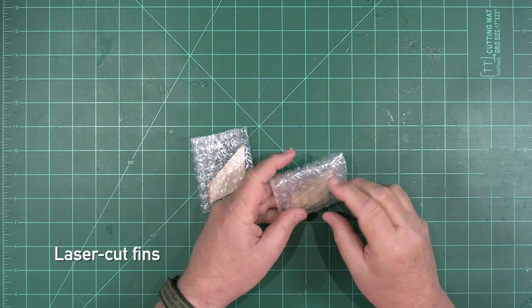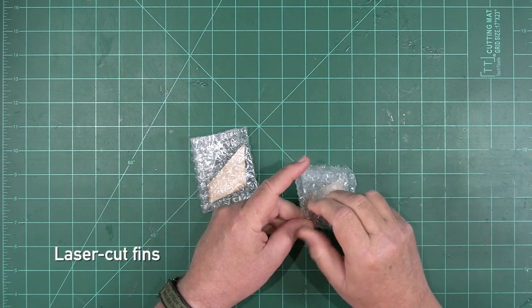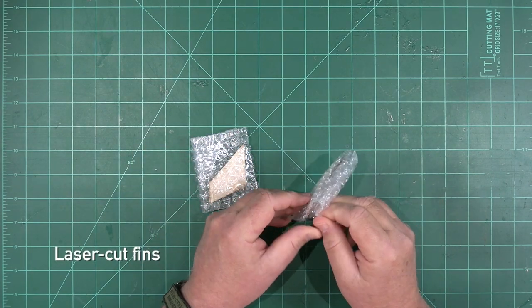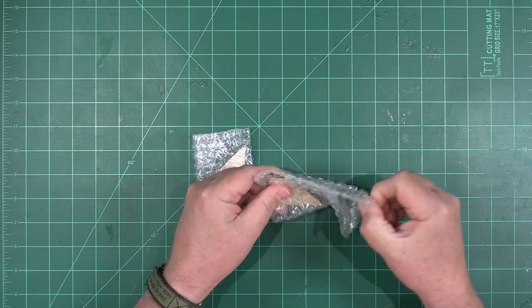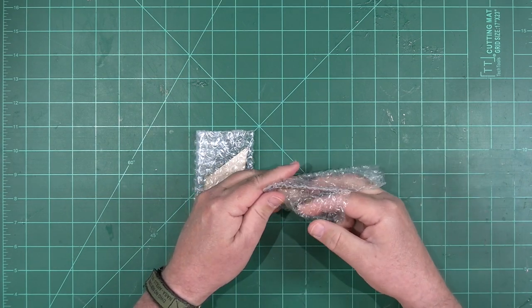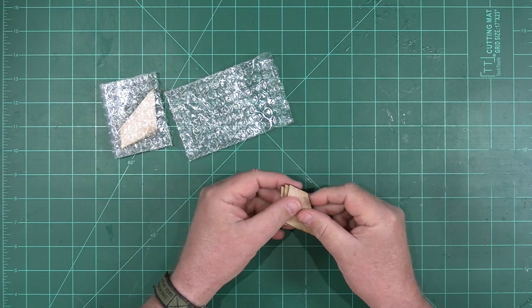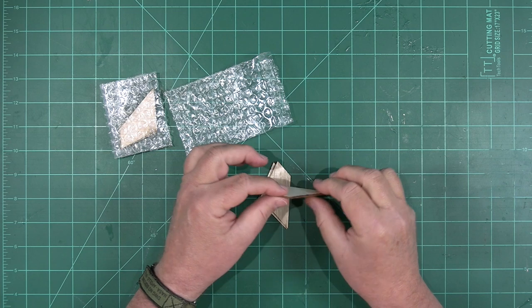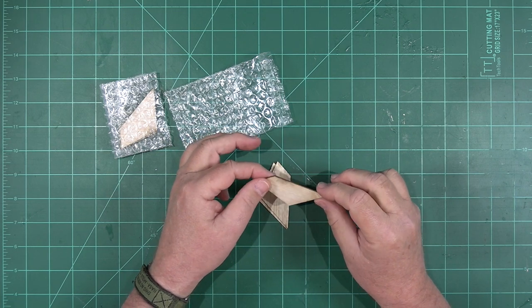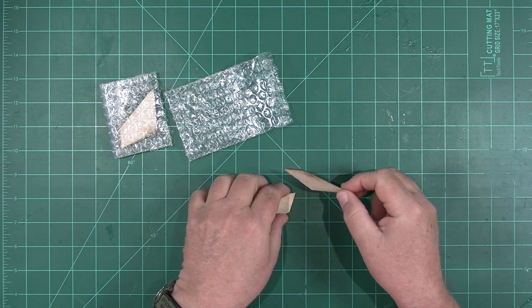Next up we have two fin sets, again packaged in bubble wrap. These are laser cut by Mike at Galactic Manufacturing. They are 1/16th inch balsa, and they are perfect for what we need.